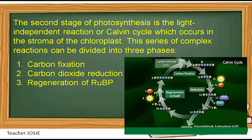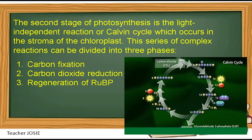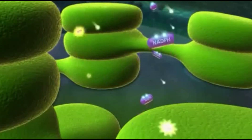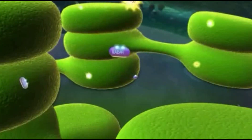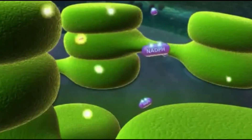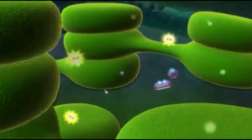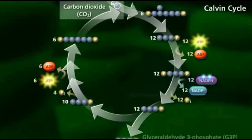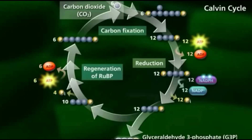The second stage of photosynthesis is the light-independent reaction or Calvin cycle, which occurs in the stroma of the chloroplast. This series of complex reactions can be divided into three phases: carbon fixation, carbon dioxide reduction, and regeneration of RuBP. The ATP and NADPH formed during the light-dependent reactions are used in the stroma to fuel the Calvin cycle reactions. The Calvin cycle consists of a series of reactions that reduce carbon dioxide to produce the carbohydrate glyceraldehyde-3-phosphate (G3P). The cycle consists of three steps, the first of which is carbon fixation.